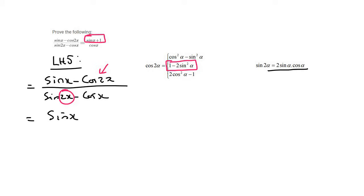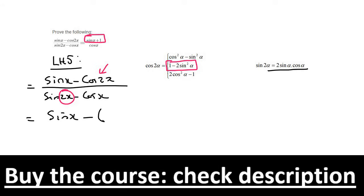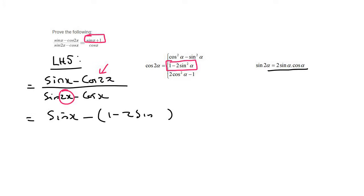And so we say sinx minus, then the golden rule to remember is always do that in a bracket. So we're going to change it to 1 minus 2 sin squared x. Then at the bottom, we can change that sin2x to 2 sinx cosx.